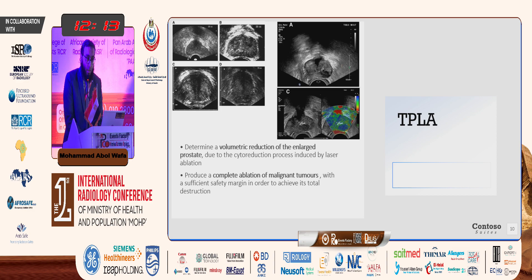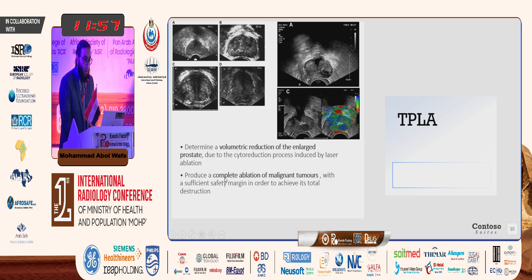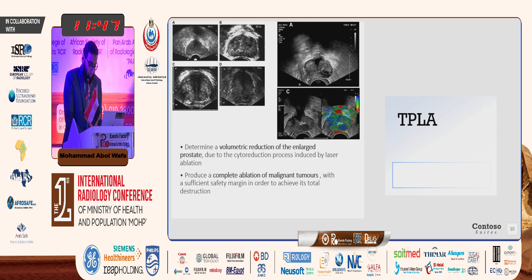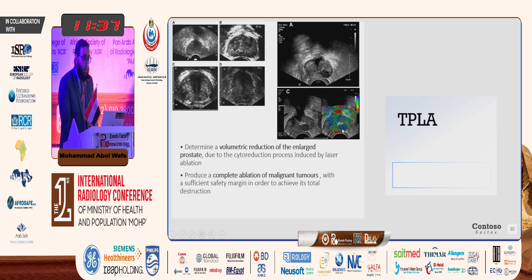Prostatic laser ablation works through volumetric reduction of the gland by cytoreduction. It may also be used as an emerging treatment for prostatic malignant tumor, but it is still under trials. In that case, we can see the lesion in the peripheral zone treated using laser ablation, though it remains under trial.